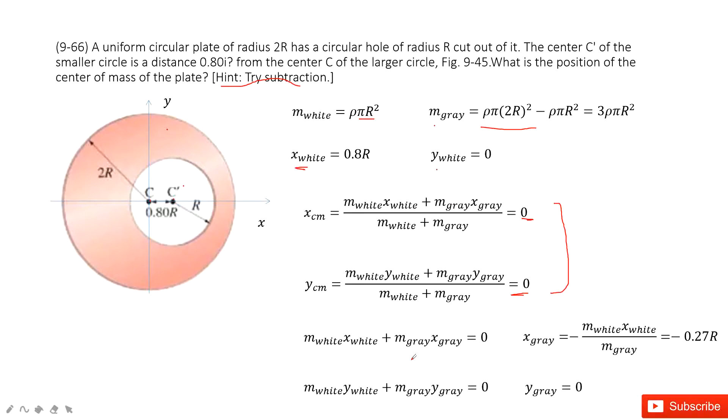Now, we input the known quantities. We get these two equations. And for this equation, we can find the x gray part is negative 0.27R and y part is 0.